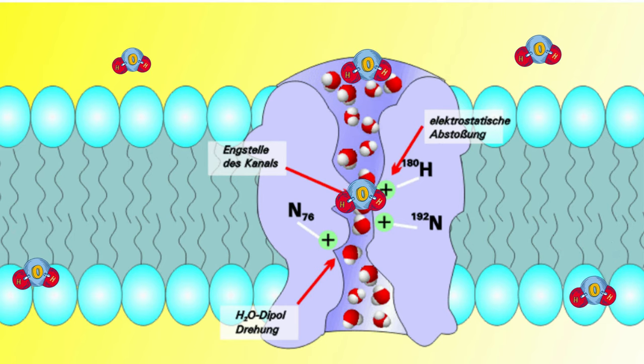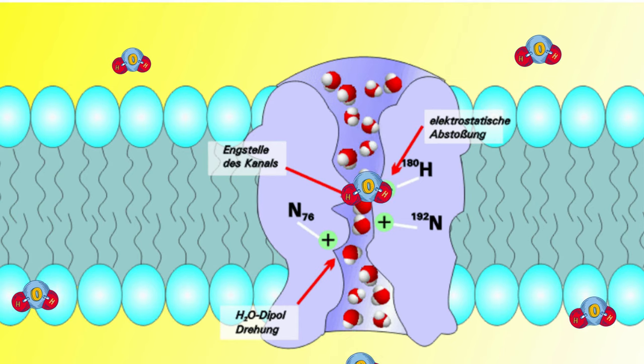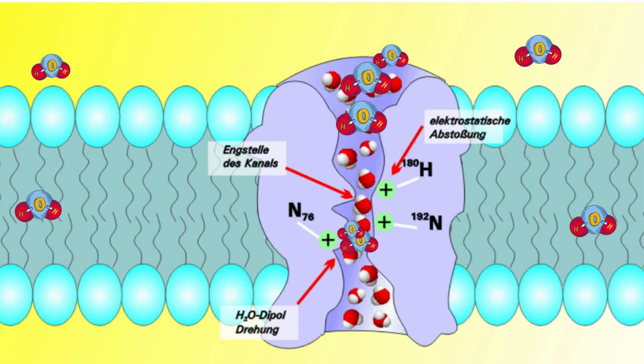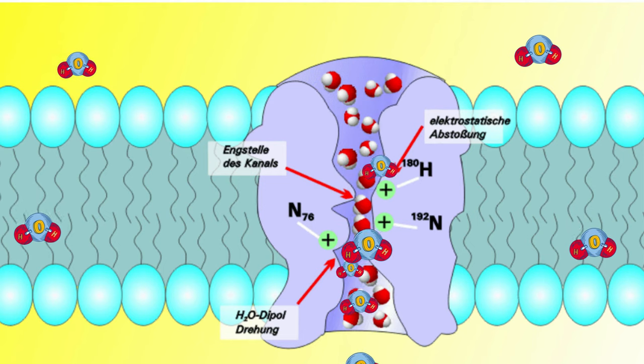However, because water is polar, this process of simple diffusion is relatively slow, and the majority of water passes into the cell using an aquaporin.